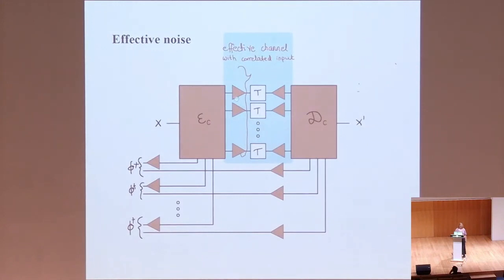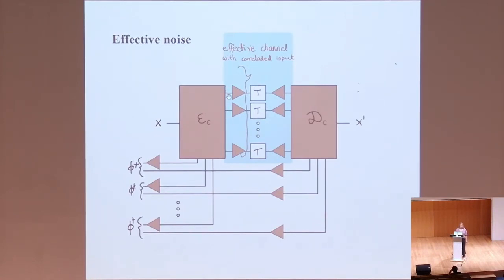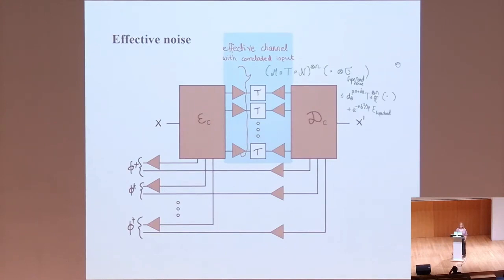We use a small part of this circuit to perform entanglement distillation to get back to pure maximally entangled states in the code space, because we need the entanglement available in the code space in order to use it for the communication. The other side is that these triangles each fail with some probability constant times P, giving an effective channel. But this channel, because of this correlation situation, has highly correlated input across all of these communication lines, so this is not quite covered by usual coding theory. The amount of correlation grows with n.